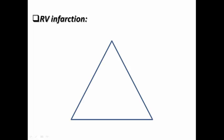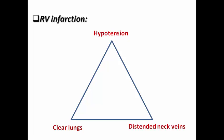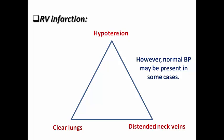RV infarction has a famous clinical triad of hypotension and clear lungs, as there is no pulmonary congestion due to reduced cardiac output from the right side to the left side. Because of the RV failure there are also distended neck veins. This is the famous triad. Although normal blood pressure may also be present in some cases, not all patients with RV infarction will be shocked, but it can easily result in hypotension and cardiogenic shock.